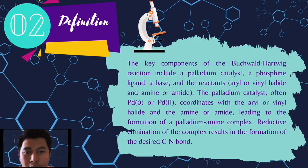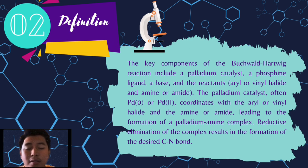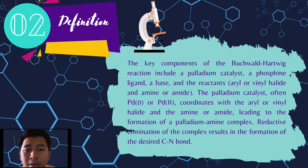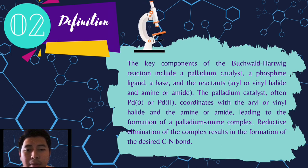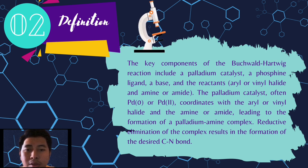A cross-coupling reaction known as the Buchwald-Hartwig reaction produces aryl amines or heteroaryl amines such as pyridine amines, when an aryl halide or triflate — including heteroaryl pyridines — reacts with a primary or secondary amine in the presence of a palladium metal catalyst and a base.